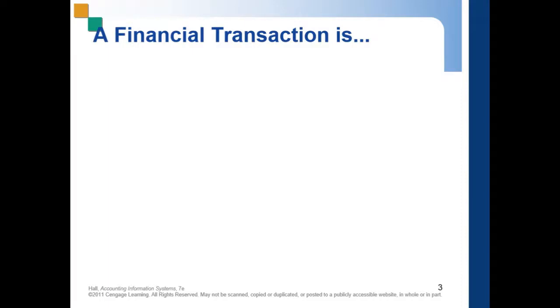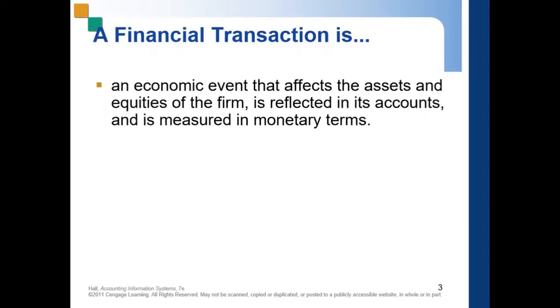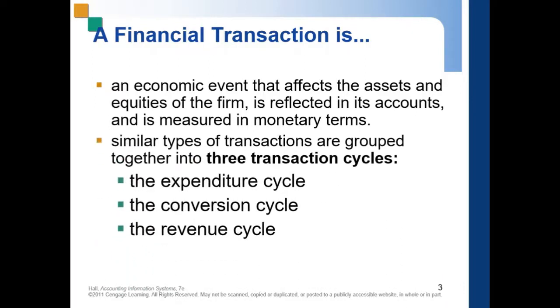Transaction processing was already introduced in Chapter 1, where it consists of three major subsystems: the revenue cycle, the expenditure cycle, and the conversion cycle. In order to further discuss transaction processing, we need to first know what a financial transaction is, because TPS applications process financial transactions. A financial transaction is an economic activity or economic event that affects the assets and equities of the firm, is reflected in its accounts, and is measured in monetary terms.